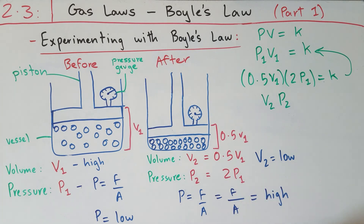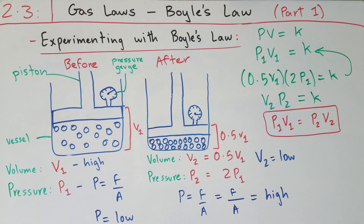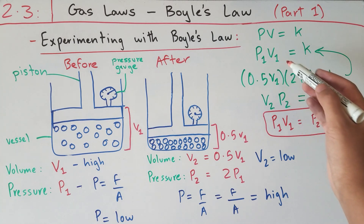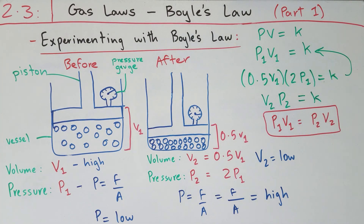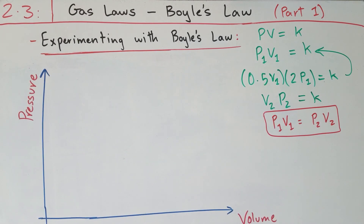We can rewrite this as V2 × P2 = k. Since k = V2 × P2 and k = P1 × V1, we can say that pressure 1 times volume 1 equals pressure 2 times volume 2. This is essentially Boyle's law in terms of mathematical equations: P1V1 = P2V2, whether compression or expansion occurs.